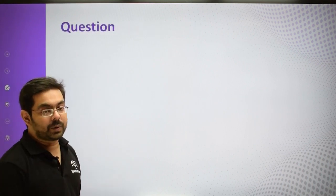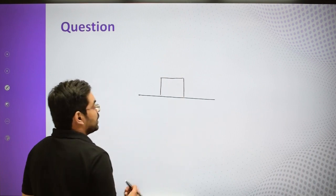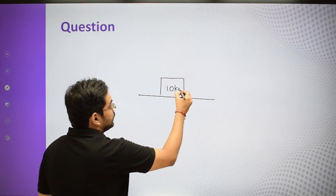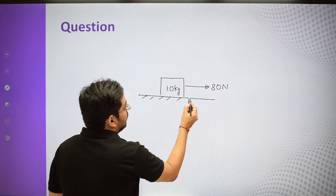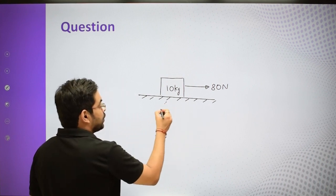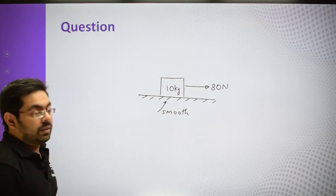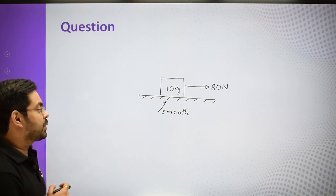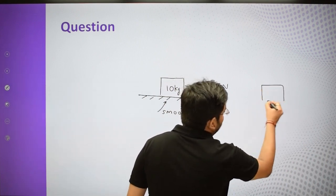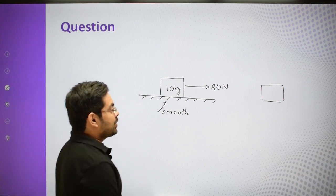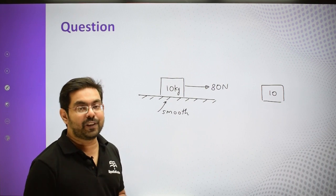Let's take a small question to understand this. Suppose there is a block of 10 kg and there is a force of 80 Newton on this block, and this is a smooth, frictionless surface. So we do not have to worry about friction acting on the body. There is only one body to isolate. This block has mass 10 kg. We will apply all the forces to make the complete free body diagram.